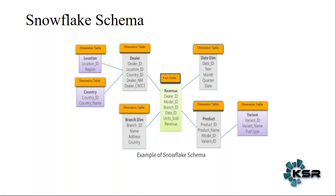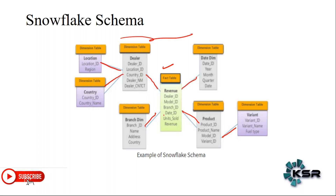By observing the fact and dimension table arrangement, you yourself can guess what snowflake schema is. There is one fact table in the middle and there is a dimension table connected to it — this part is like star schema. But the extra thing here is that a dimension table is also connected to an additional dimension table. So it is a schema where fact tables are connected to dimension tables, and dimension tables can also have further dimension tables connected — meaning a dimension table can be connected to a fact table indirectly. This is how you define snowflake schema.